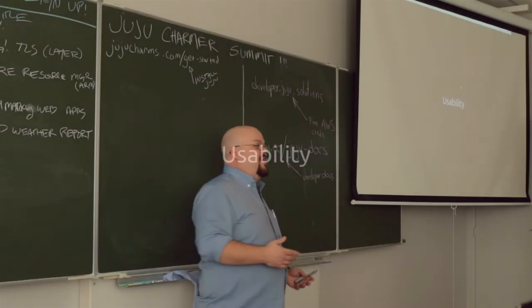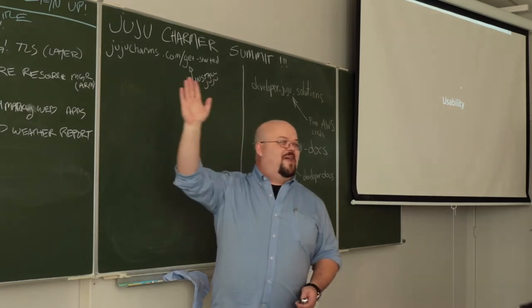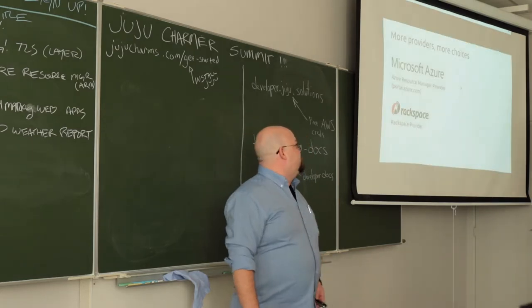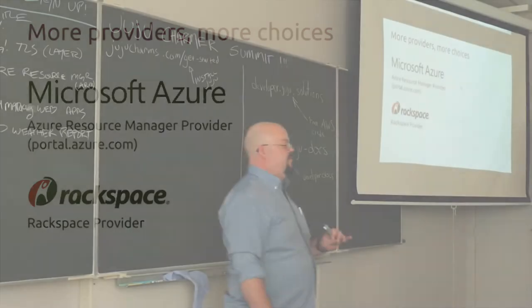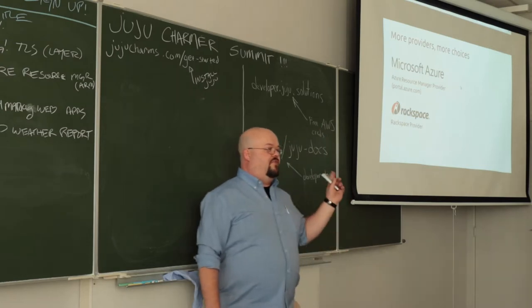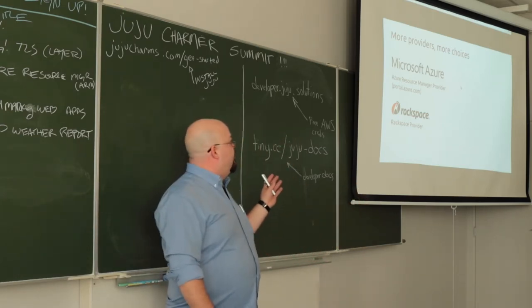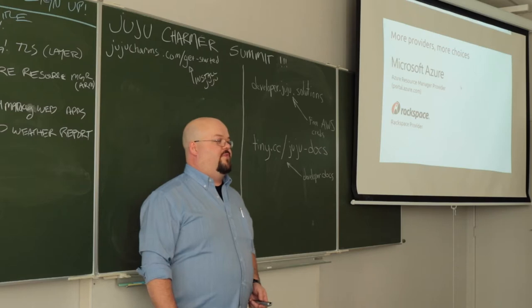Starting with usability — I come from a web development and user experience background, and I'm a command line lover. When it comes to Juju 2.0, there are two main updates for what we call providers, places you can run and deploy Juju charms to. Microsoft Azure is not new, but what is new is their new SDK and the new portal.azure.com APIs. The other one is Rackspace — there's a new Rackspace provider so you can use the Rackspace public cloud to deploy your workloads with Juju.